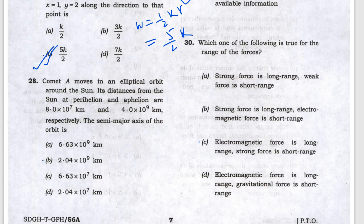Next, they are asking for the semi-major axis — it equals (perihelion distance + aphelion distance) / 2. The values are 9 and 7, so the answer will be approximately B.